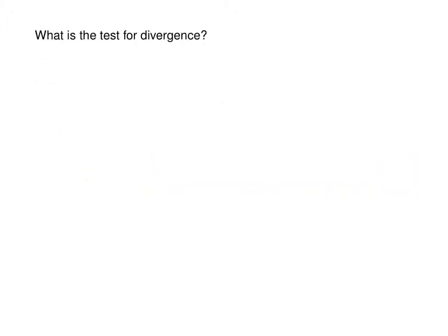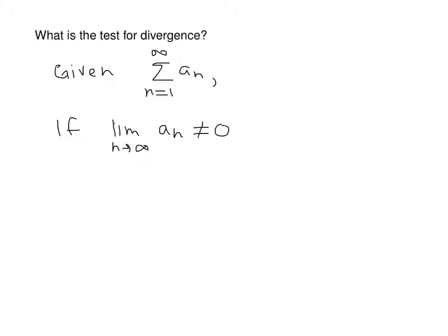Next, what is the test for divergence? Given a series — the sum from n equals 1 to infinity of a sub n — if the limit of the terms as n goes to infinity of a sub n is not equal to 0, then you know that your series diverges.